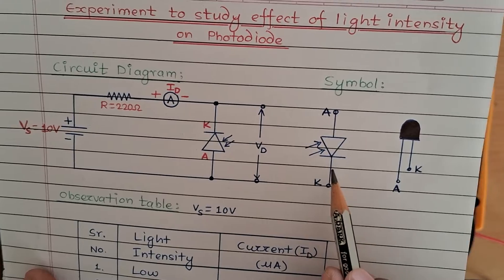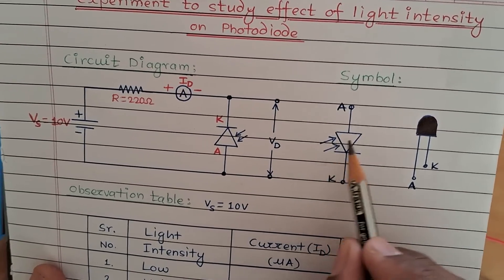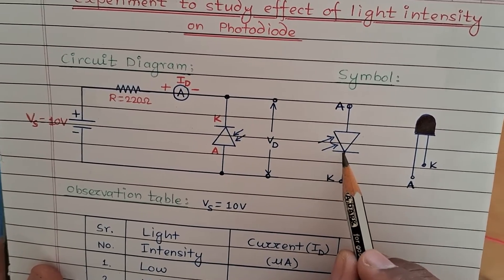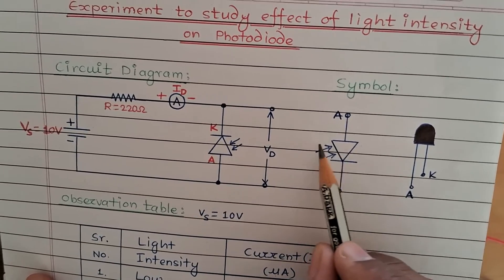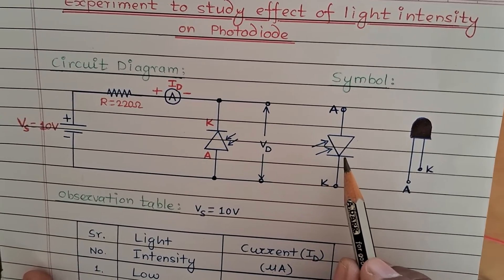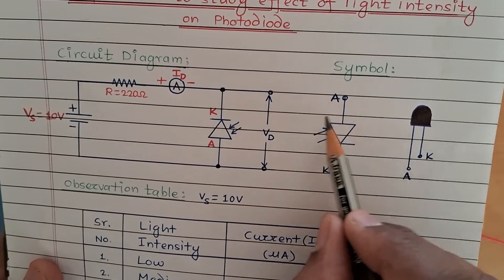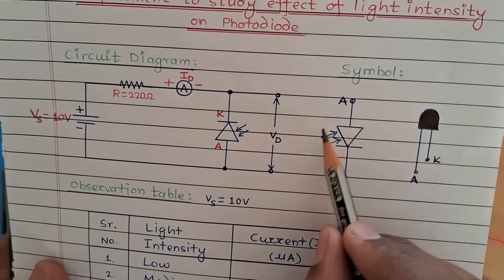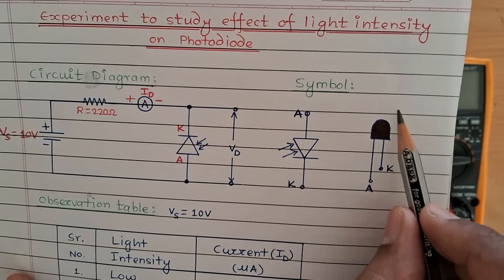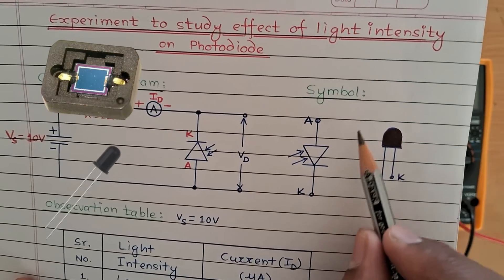This is the symbol for the photodiode. If you look at this symbol you will find that it is similar to the normal P-N junction diode — the only difference is this arrow. This arrow indicates that when light falls on the P-N junction, electron-hole pairs are generated and current starts to flow through the diode.